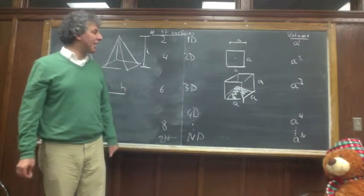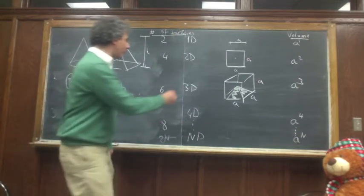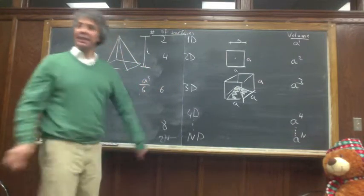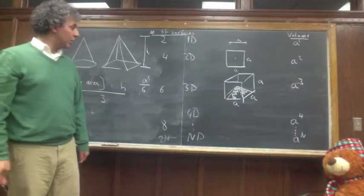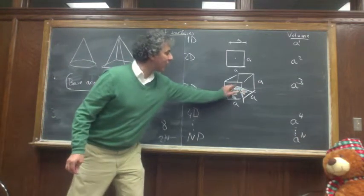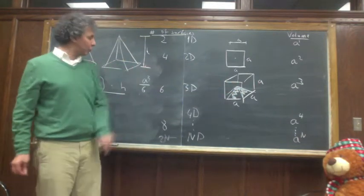So each of them would have a volume of A cubed divided by six, because we have six surfaces. And what is the base area? A squared. The height is A over two, so there must be a factor of one over three.